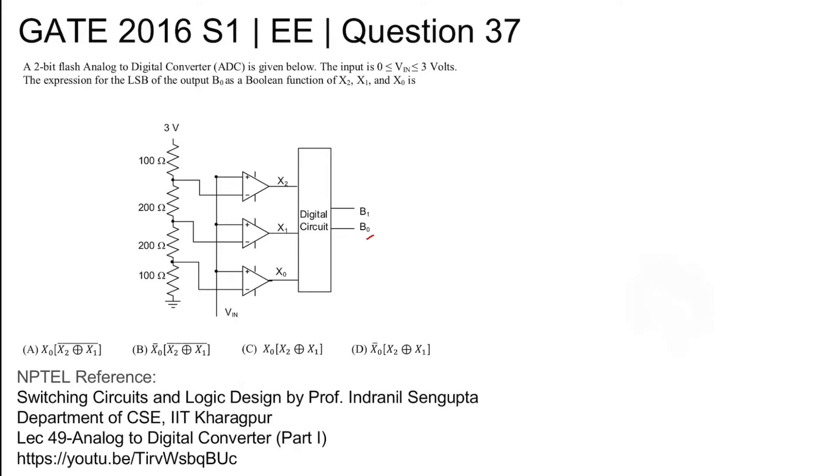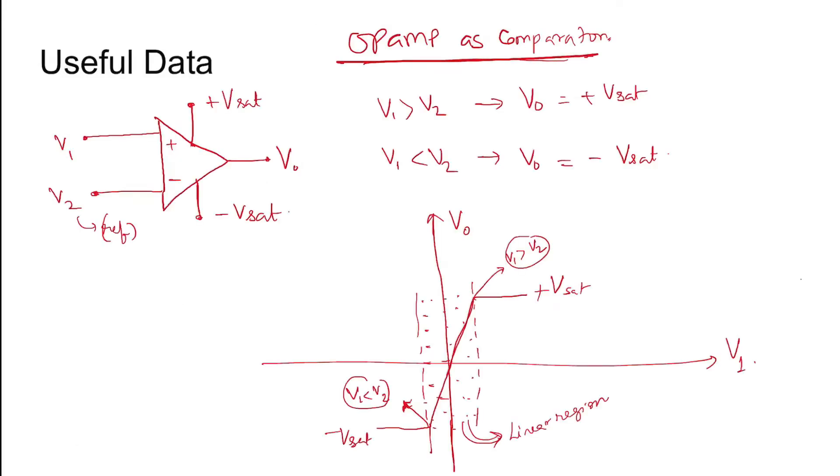Now, op-amp as a comparator. We see that if v1 is greater than v2, then v0 becomes plus Vsat. And if v1 is less than v2, then v0, that is the output voltage, becomes equal to minus Vsat.